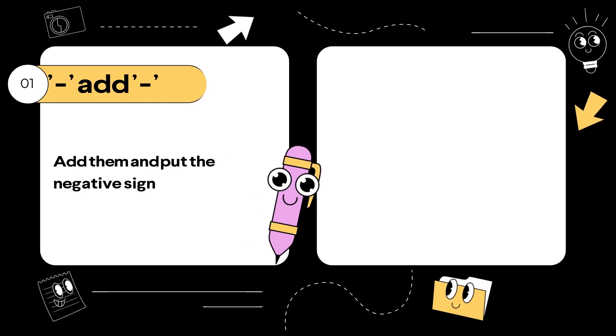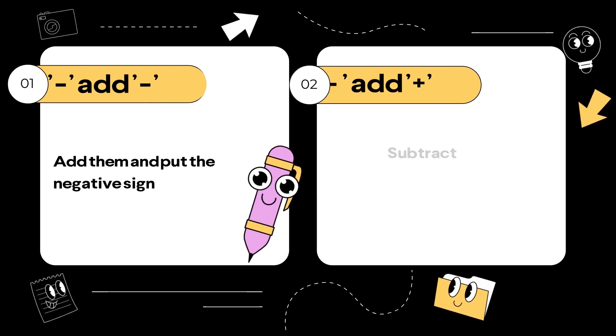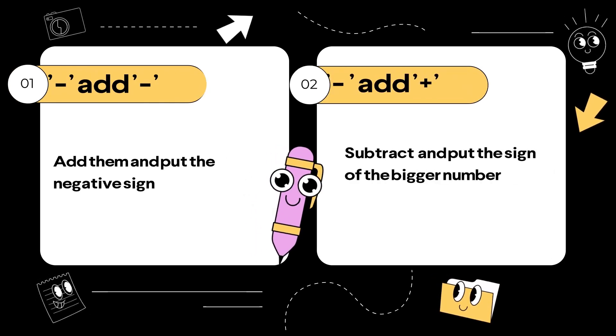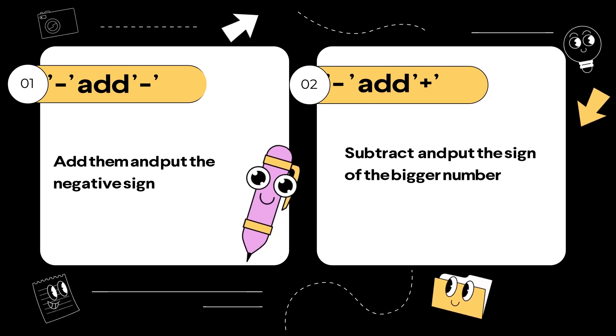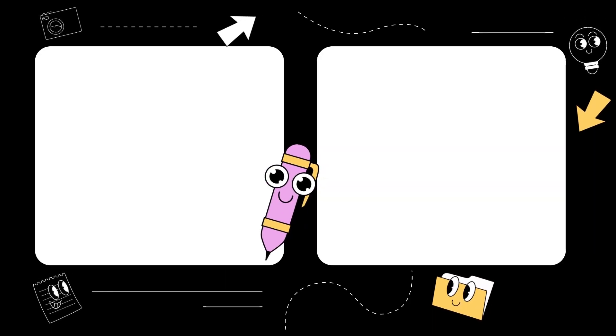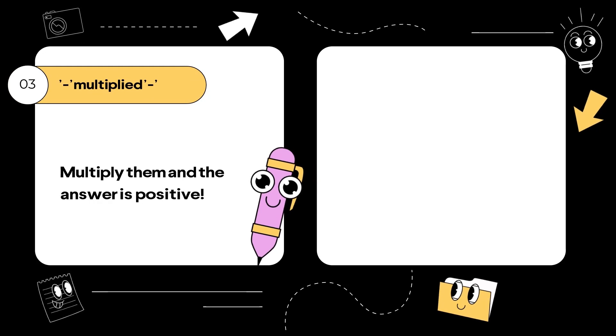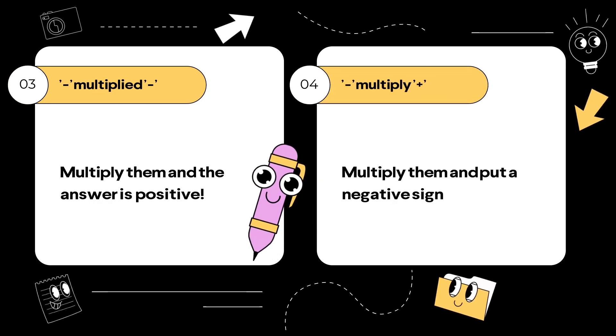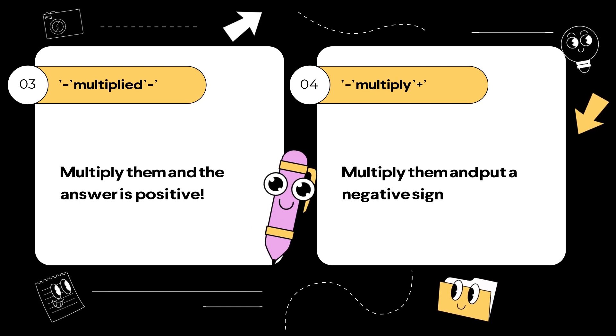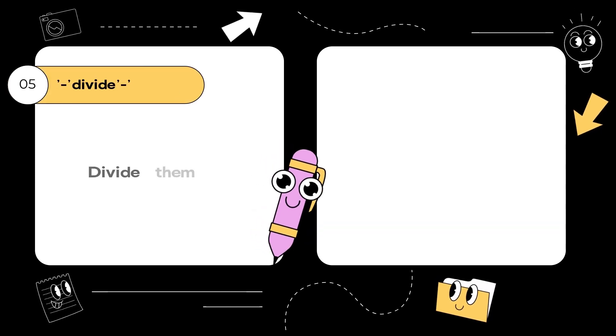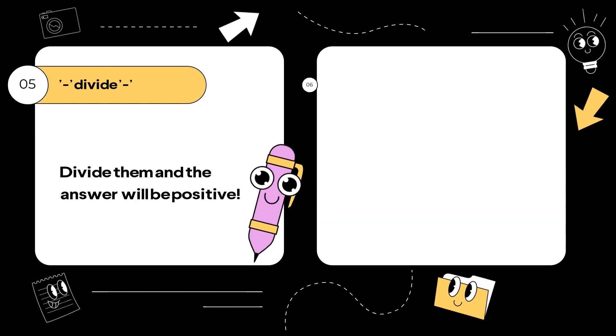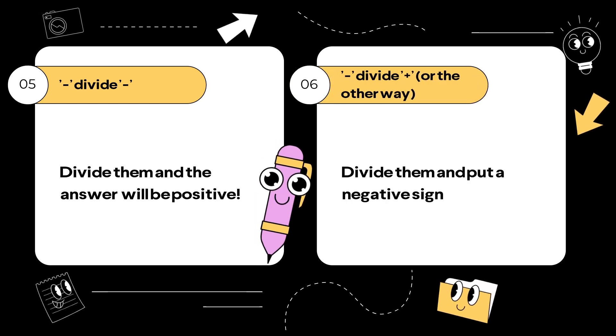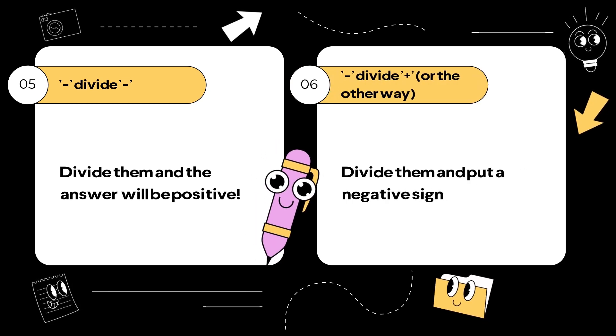We add negative numbers and then put a negative sign. We subtract a negative and positive number and then put the sign of the bigger number. We multiply two negative numbers to get a positive number. When we multiply a positive and negative number, the answer will be given with a negative sign. Divide two negative numbers, the answer will be positive. We divide a positive and negative number, the answer is always negative.